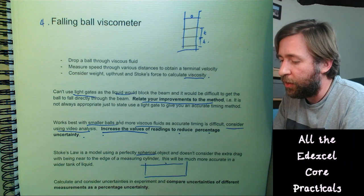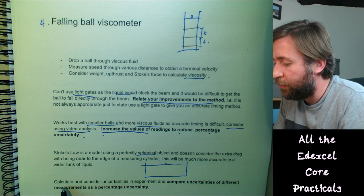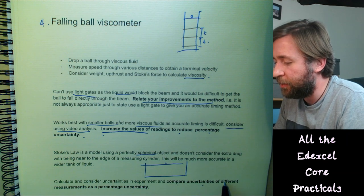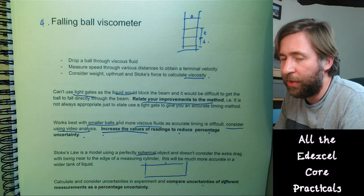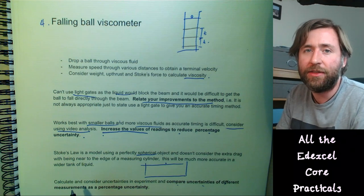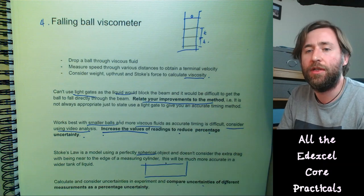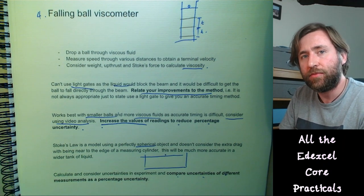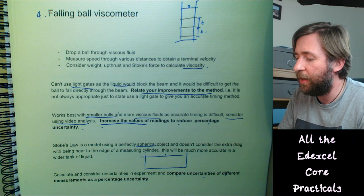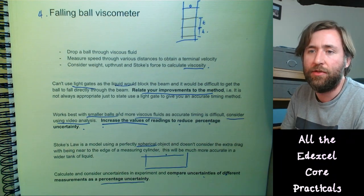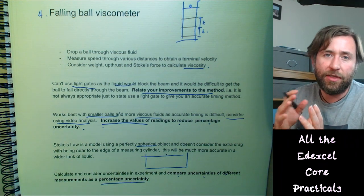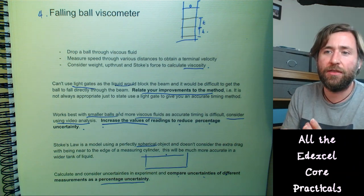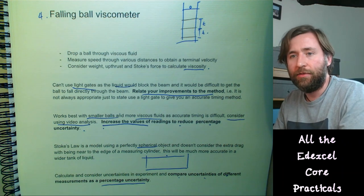When comparing uncertainties from different measurements, always compare them as percentage uncertainties rather than absolute uncertainties because they are different quantities. So always think in terms of percentage uncertainty when making comparisons.